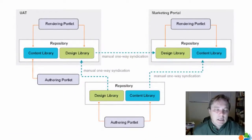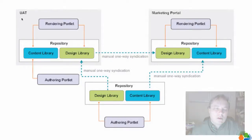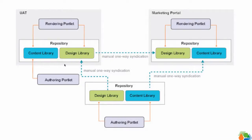Let's take a look at this graphic. Imagine that you have a server environment called UAT for user acceptance testing, and then you have a production environment called the marketing portal. In this kind of setup, you might want to create in your repository two different libraries: a content library and a design library. In the design library you put your HTML components, authoring templates, presentation templates — the kinds of things that really only your developers or power user authors are allowed to work on and change.